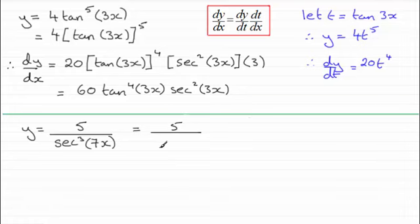and for sec cubed, that's going to be 1 over cos cubed, cos cubed of 7x.